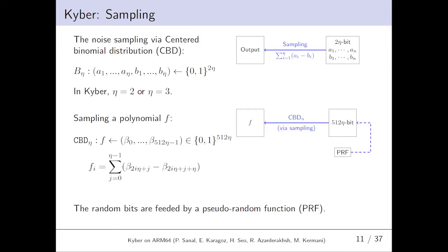Sampling. The noise is sampled from a central binomial distribution denoted by B eta. Each 2 eta bit produces an output. In Kyber eta is 2 or eta is 3. By using B eta, a polynomial f is produced by sampling each coefficient fi deterministically from 512 n-bit output via a function called CBD eta.